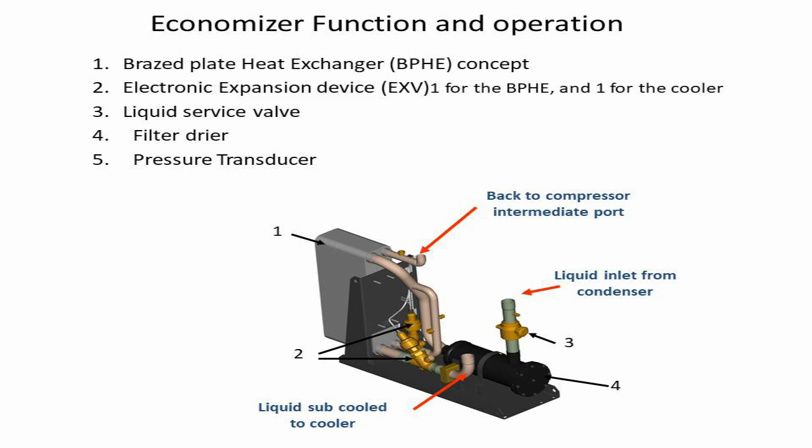Economizer system is an addition to a normal chiller system, and it benefits well when the chiller is working at least at 70% or above. Below the previously mentioned capacity, the economizer is not in operation. Here is the list of components.